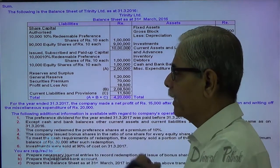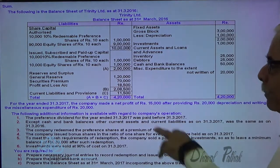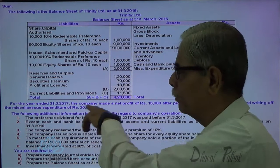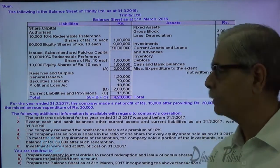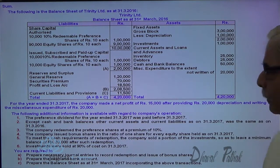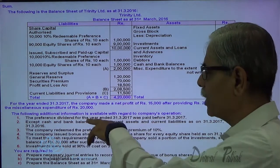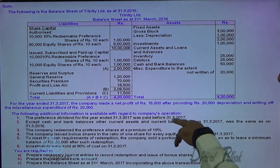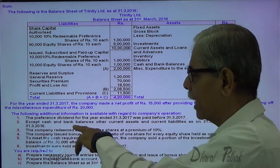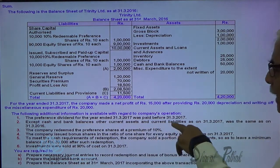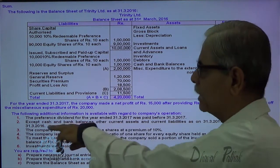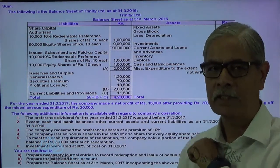For the year ended on 31st of March 2017, the company made a net profit of 15,000 after providing for 20,000 depreciation and writing off miscellaneous expenditure of 20,000. Following additional information is available: preference share dividend for the year ended 31st of March was to be paid before 31st of March 2017. Except cash and bank balance, other current assets and liabilities as on 31st of March 2017 was the same as on 31st of March 2016.